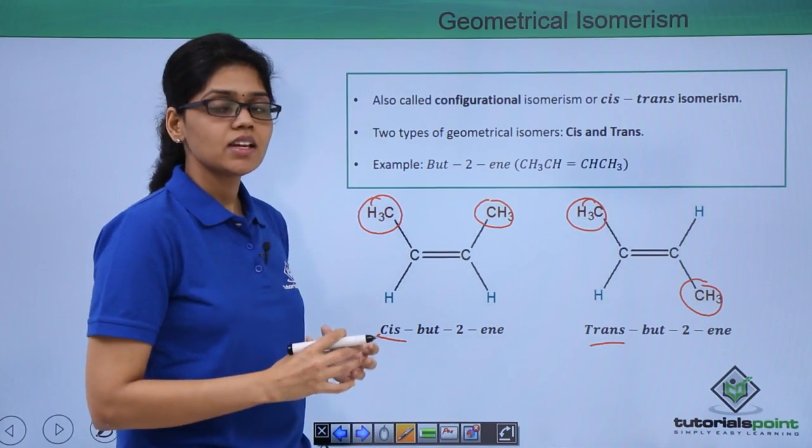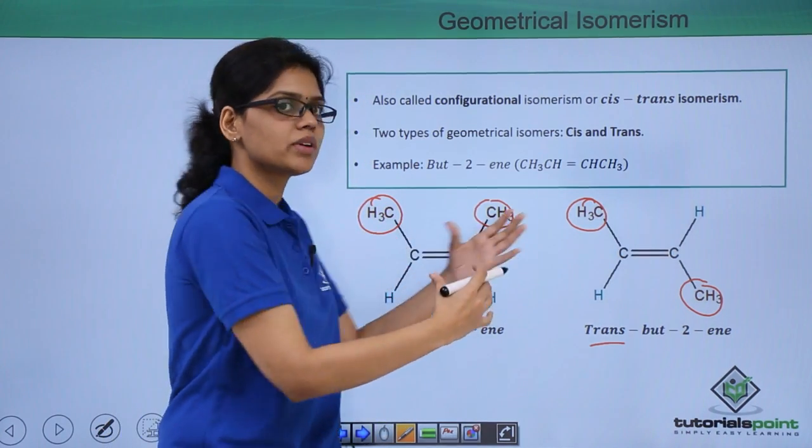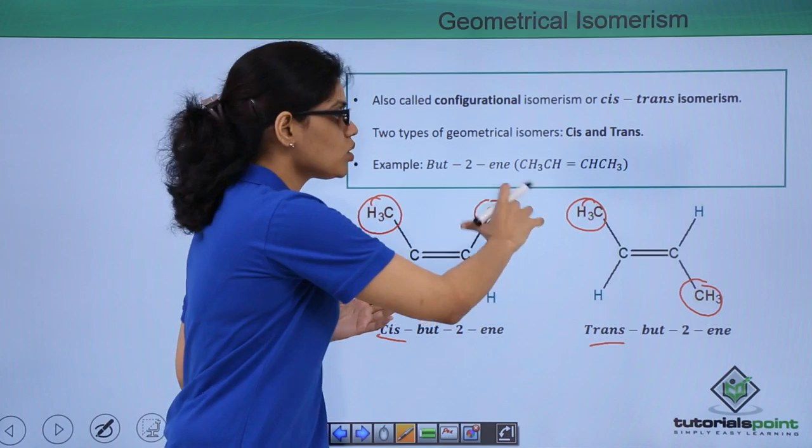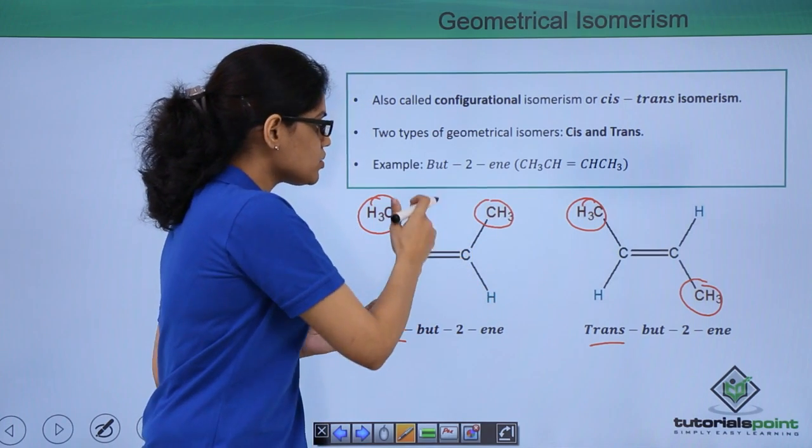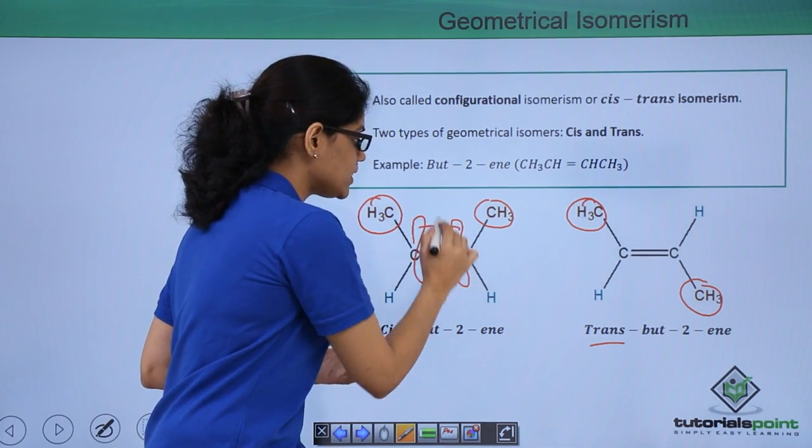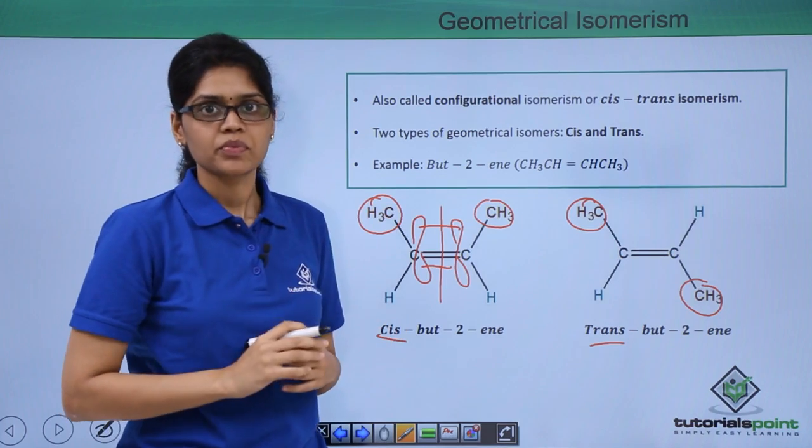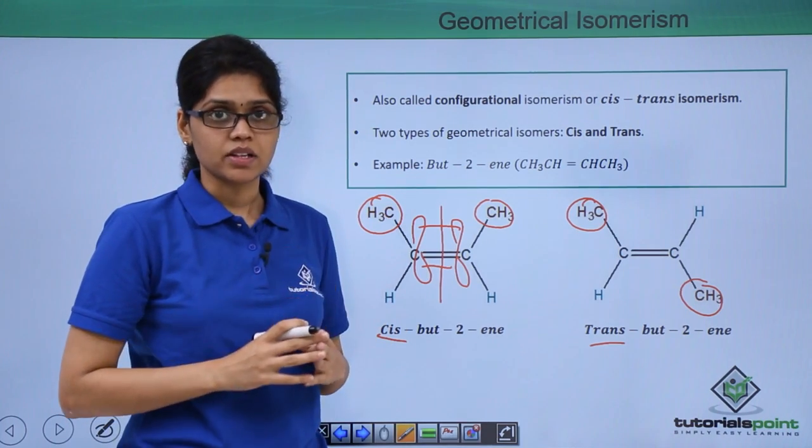As you can clearly see if I need to convert the cis isomer to trans isomer, I need to rotate it in such a way that the p-p overlap is no more parallel and this particular bond gets broken. It's not possible at room temperature.